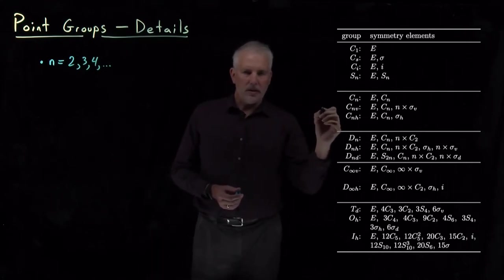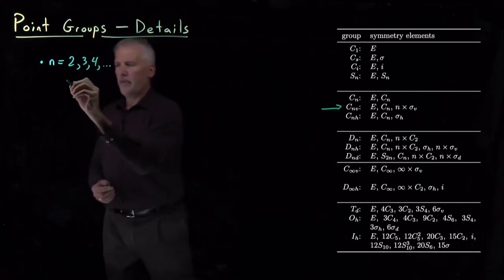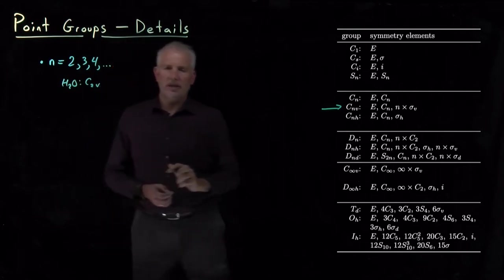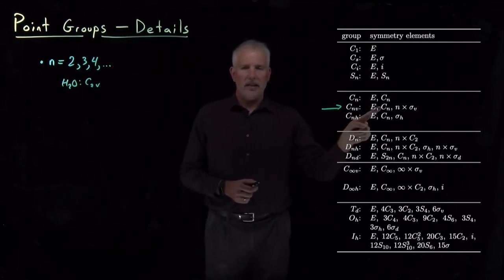We've seen water is in the C2V point group because it has identity, a C2 rotation, and two vertical reflection planes.